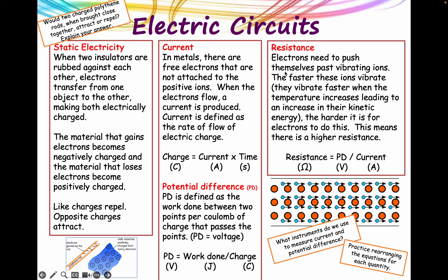Electrons need to push themselves past vibrating ions in a lattice structure. Sometimes these vibrating ions impede the flow of the electrons. Imagine you're an electron and you bump into one - that slows your rate of progress towards the positive end of the circuit. If you increase the temperature of a wire, the ions vibrate more and increase the impedance to the flow. Temperature causes them to vibrate faster; they have more vibrational kinetic energy, and it's harder for the electrons to pass through without being impeded. That's the cause of resistance in metals.